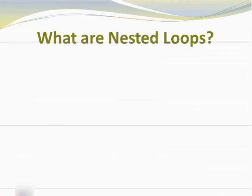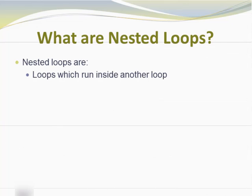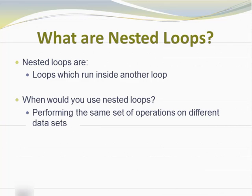So what do we mean when we talk about a nested loop? A nested loop is just a loop that runs inside of another loop. You may want to use it when you're performing the same set of operations on a bunch of different data sets — one loop performs the operations, and another loop feeds in different data sets.